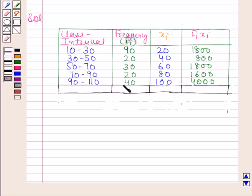On adding all this, we get 200 and on adding all this, we get 10,000.